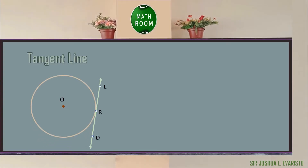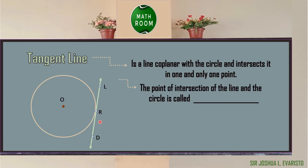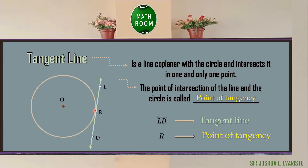Let us start our discussion on tangent line. By definition, a tangent line is a line coplanar with a circle and intersects it in one and only one point. Coplanar means same plane, meaning that the circle and the line are on the same plane and they intersect at exactly one point. The point of intersection of the line and the circle is called the point of tangency. In the given figure, we can determine our tangent line, which is line LD, and the point that touches the line and the circle is point R, meaning point R is our point of tangency.